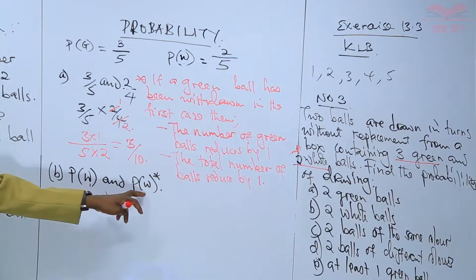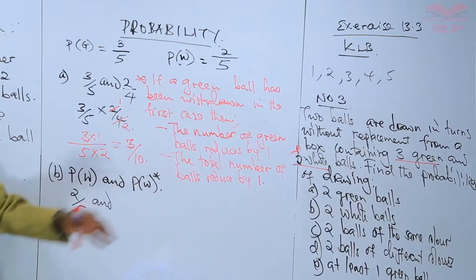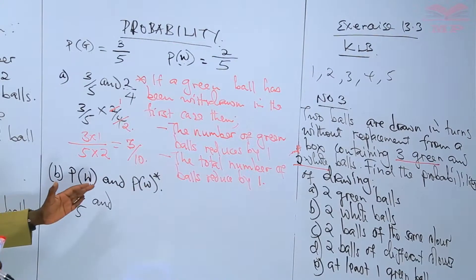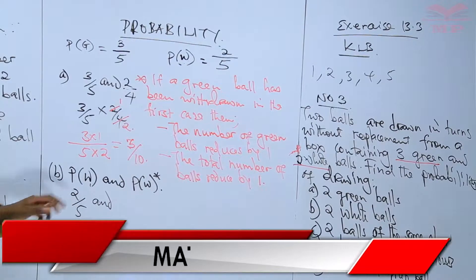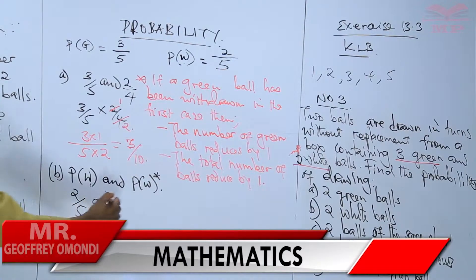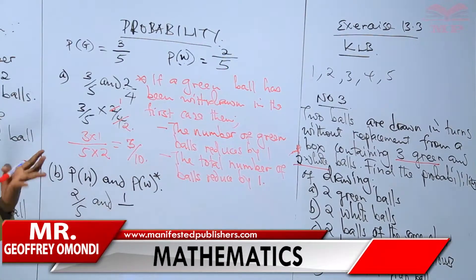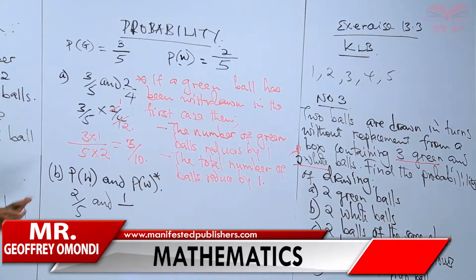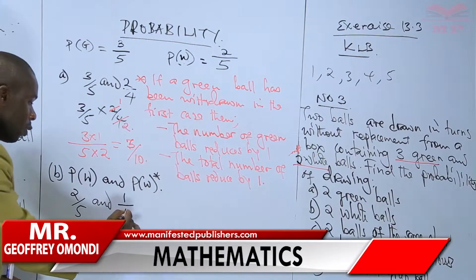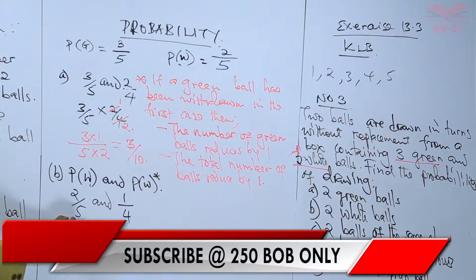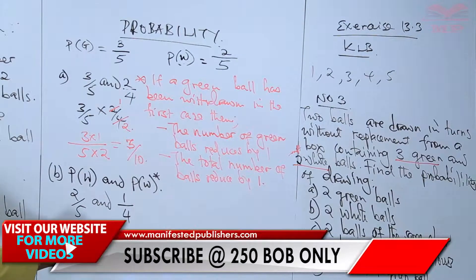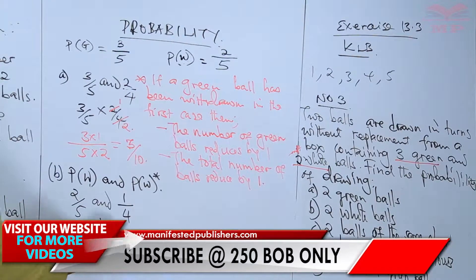The probability of picking the second white ball means that the white balls have now reduced from two to one, and the total number of balls has reduced from five to four. So we have two over five times one out of four.